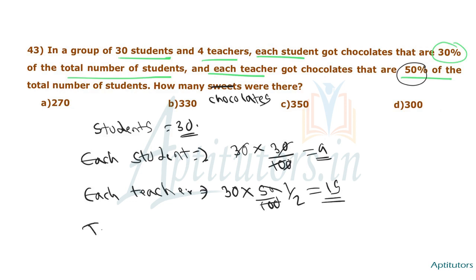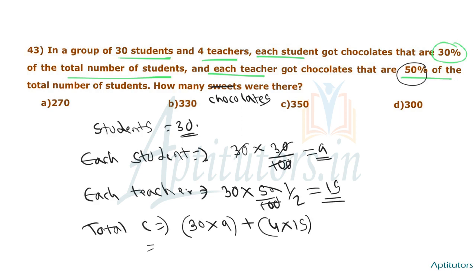Total chocolates: 30 students × 9 chocolates = 270, plus 4 teachers × 15 chocolates = 60. So 270 plus 60 equals 330. The total number of chocolates is 330. Option B — 330 — is the correct answer.